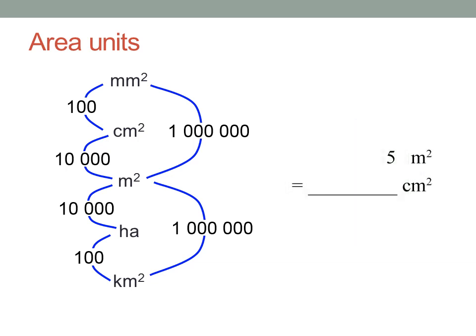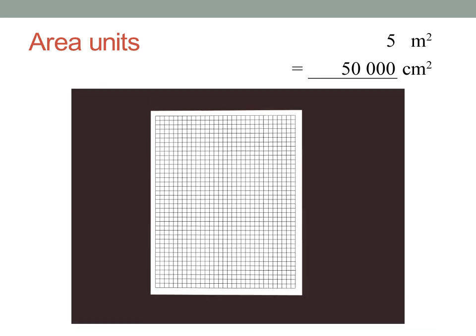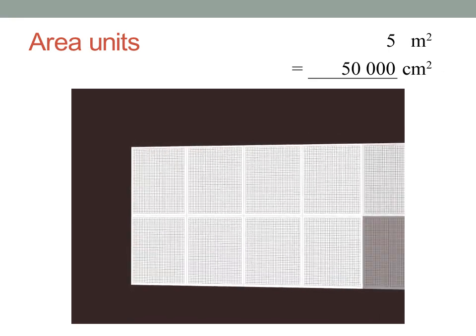Let's try some area conversions now. Five square metres is how many square centimetres? Square centimetres are smaller than square metres, so I need more of them — multiply. Five times ten thousand is fifty thousand square centimetres. Try putting together sheets of one centimetre grid paper to make a total area of five square metres.